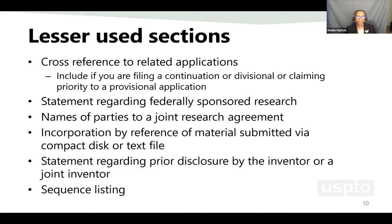The lesser-used sections include a cross-reference to related applications — for instance, if you're claiming priority to a provisional application or if your application is a continuation or divisional, you need to include that in the first sentence of the specification. If there is federally sponsored research involved, that must be in the application. If there are parties to a joint research agreement, those should be listed. Any material incorporated by reference via compact disk or text file — typically sequence listings — should be included, as well as any statement regarding a prior disclosure by you or a joint inventor.